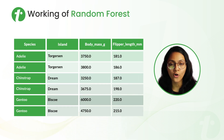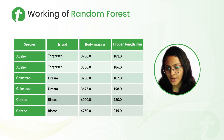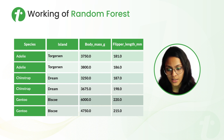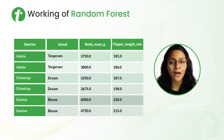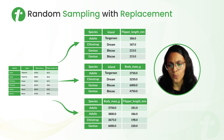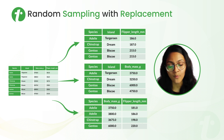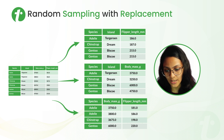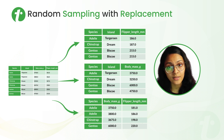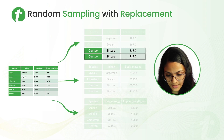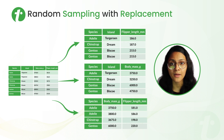Now let's understand the working of random forest with an example. We have a dataset where we have to determine the species of penguins based on certain features: island, body mass in grams, and flipper length in mm. We have to do random sampling with replacement on this dataset. Random sampling means we select some random rows and random features to make random samples. Here we are selecting random rows and random features and making three random samples. Replacement means some rows may repeat and some rows may not be included.